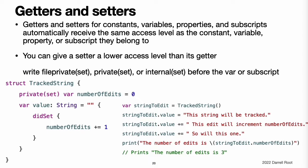Getters and setters for constants, variables, properties, and subscripts automatically receive the same access level as the constant, variable, property, or subscript they belong to. You can give a setter a lower access level than its corresponding getter to restrict the read-write scope of that variable, property, or subscript. You assign a lower access level by writing file private(set), private(set), or internal(set) before the var or subscript introducer. Note, this rule applies to stored properties as well as computed properties. Even though you do not write an explicit getter and setter for a stored property, Swift still synthesizes an implicit getter and setter for you to provide access to the stored property's backing storage. Use file private(set), private(set), and internal(set) to change the access level of the synthesized setter in exactly the same way as for an explicit setter in a computed property.